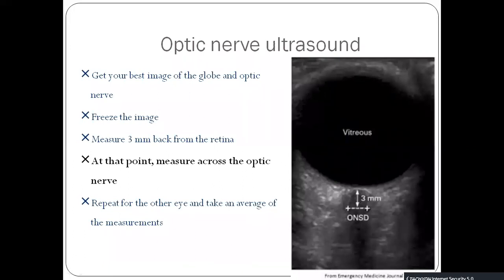To get the best image of the globe and optic nerve, you need to measure three millimeters down from the retina. Three millimeters is chosen because it is the site where the optic nerve has the potential to distend significantly, and it is also the best localization confirmed by different studies. At that point, you measure across the optic nerve horizontally from the inside of the sheath to the inside. Then repeat on the other eye and take an average of the measurements.